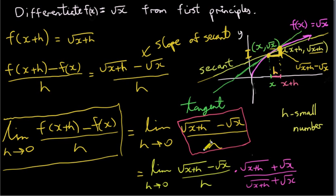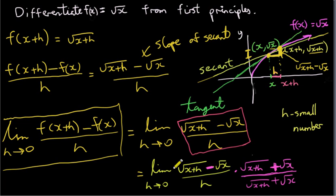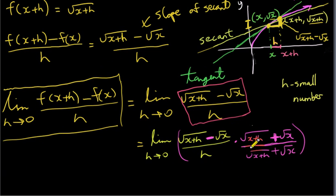So here's the trick. What we do is take our function and multiply above and below by the surd conjugate of the numerator. The numerator involves square roots or irrational quantities, and the surd conjugate is got by changing the minus sign to a plus sign. So we just copy out our numerator and replace the minus sign with a plus sign: root x plus h plus root x. We multiply the numerator by this quantity, and we must do the same underneath. We have to multiply above and below by the same thing.